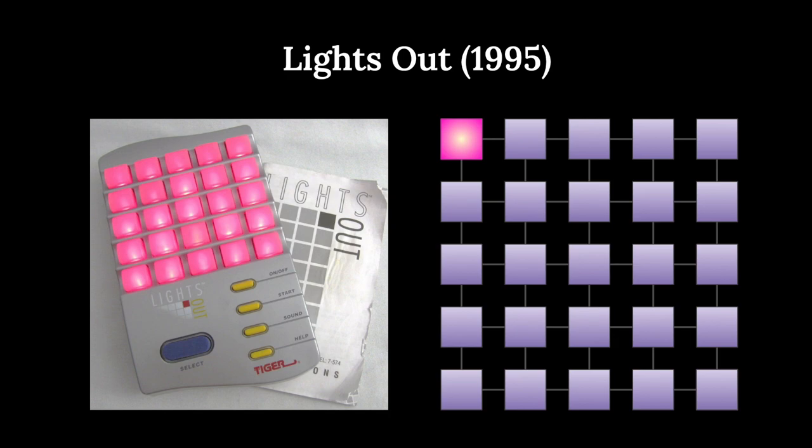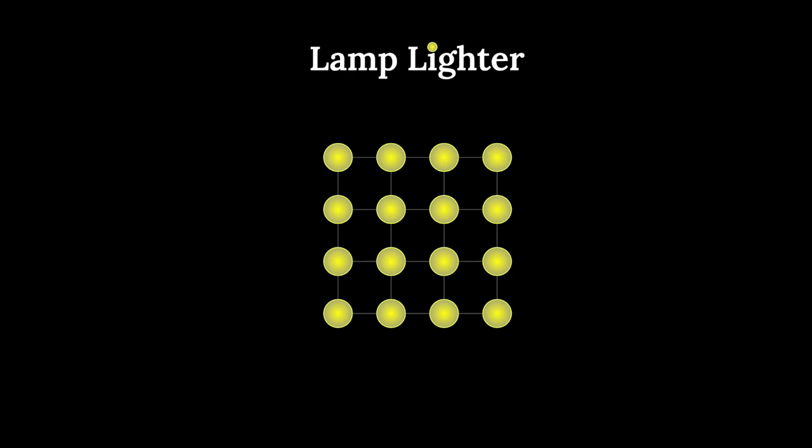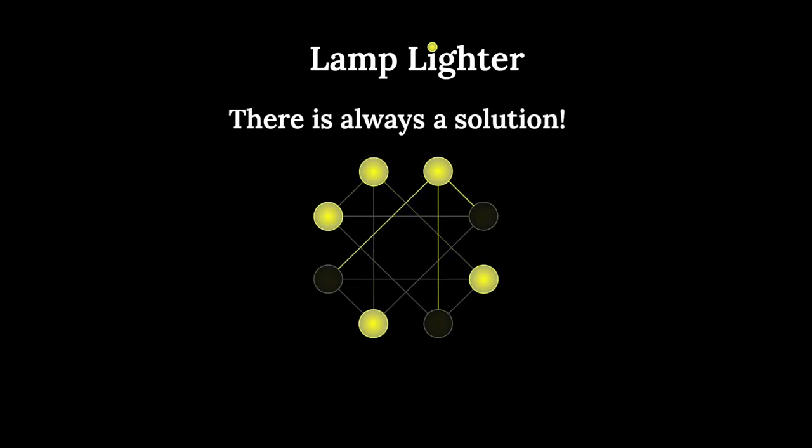Today I'd like to discuss a slightly different game called Lamp Lighter, where you start with a bunch of lamps that are initially off and you have to turn them all on. But here's the catch - you can start with any crazy pattern you want. It doesn't matter what it is. And the amazing thing is, with Lamp Lighter, there is always a solution. And today I'm going to show you an amazing proof that that's the case.